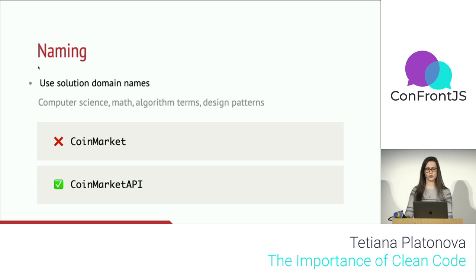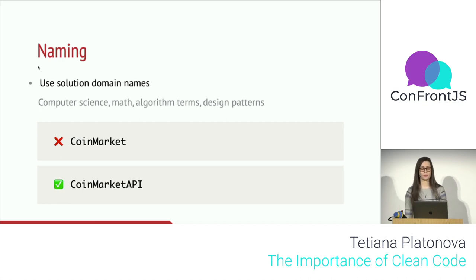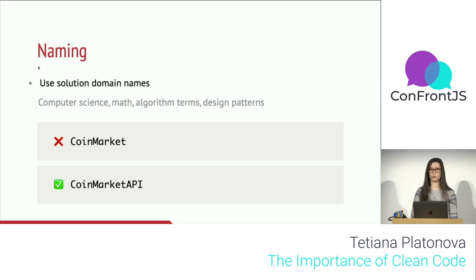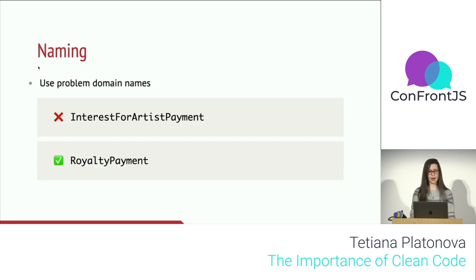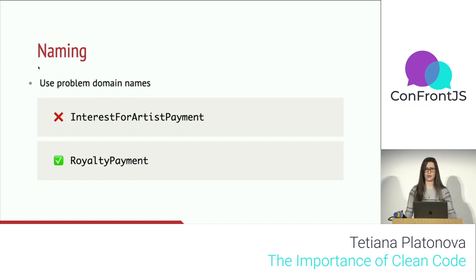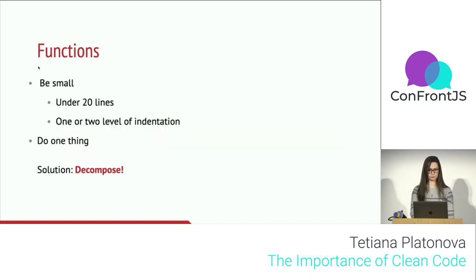Use solution domain names: most of the time your code will be read by fellow programmers, so don't be afraid to use math or science terms. For example, naming something 'CoinMarket' gives no information beyond being a class, but adding 'API' — just three letters — immediately tells you that you can call this class to get information like a currency exchange rate. At the same time, using problem domain names is also a good approach where no programming term fits easily; using a business name would be a better solution.